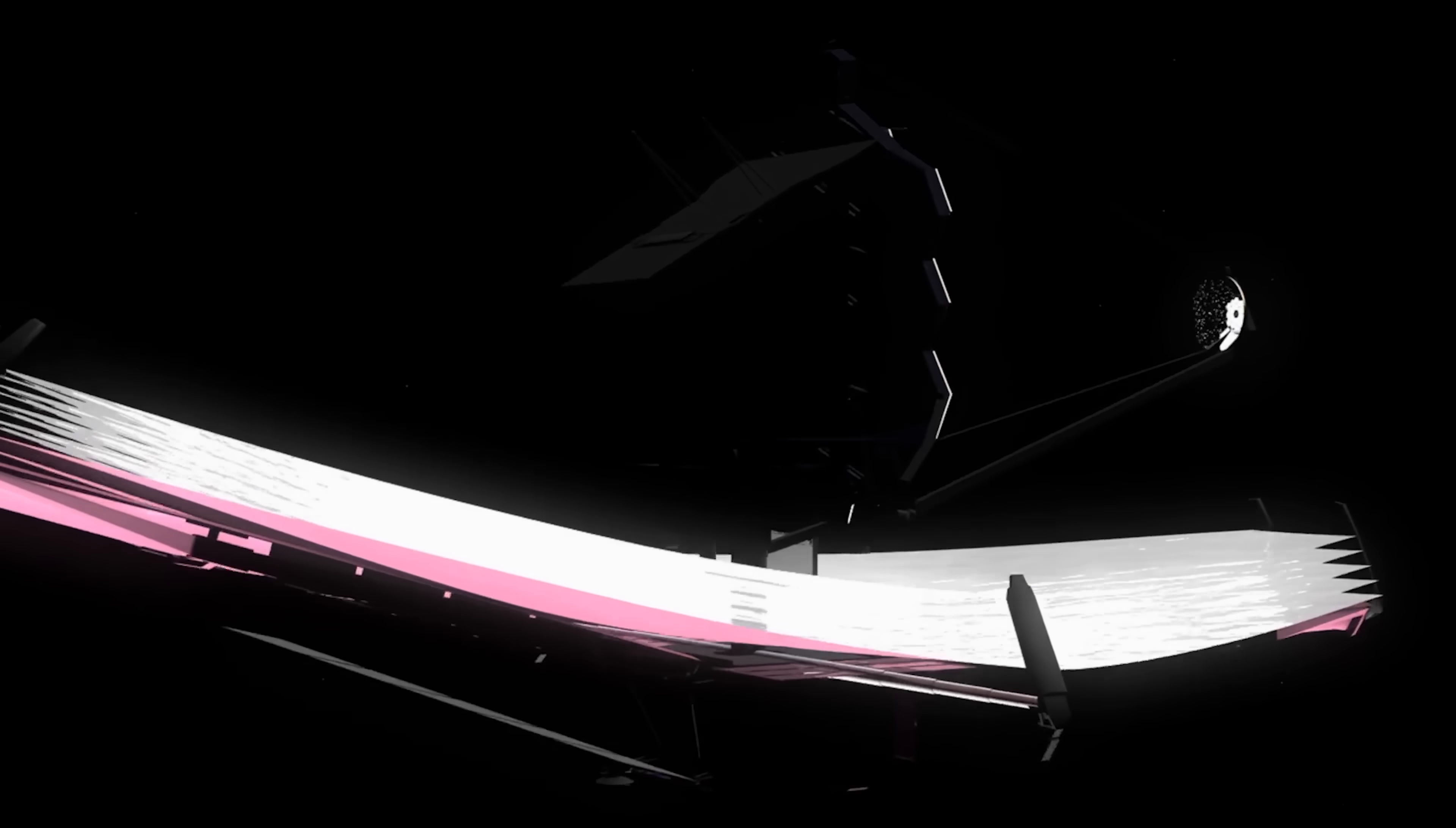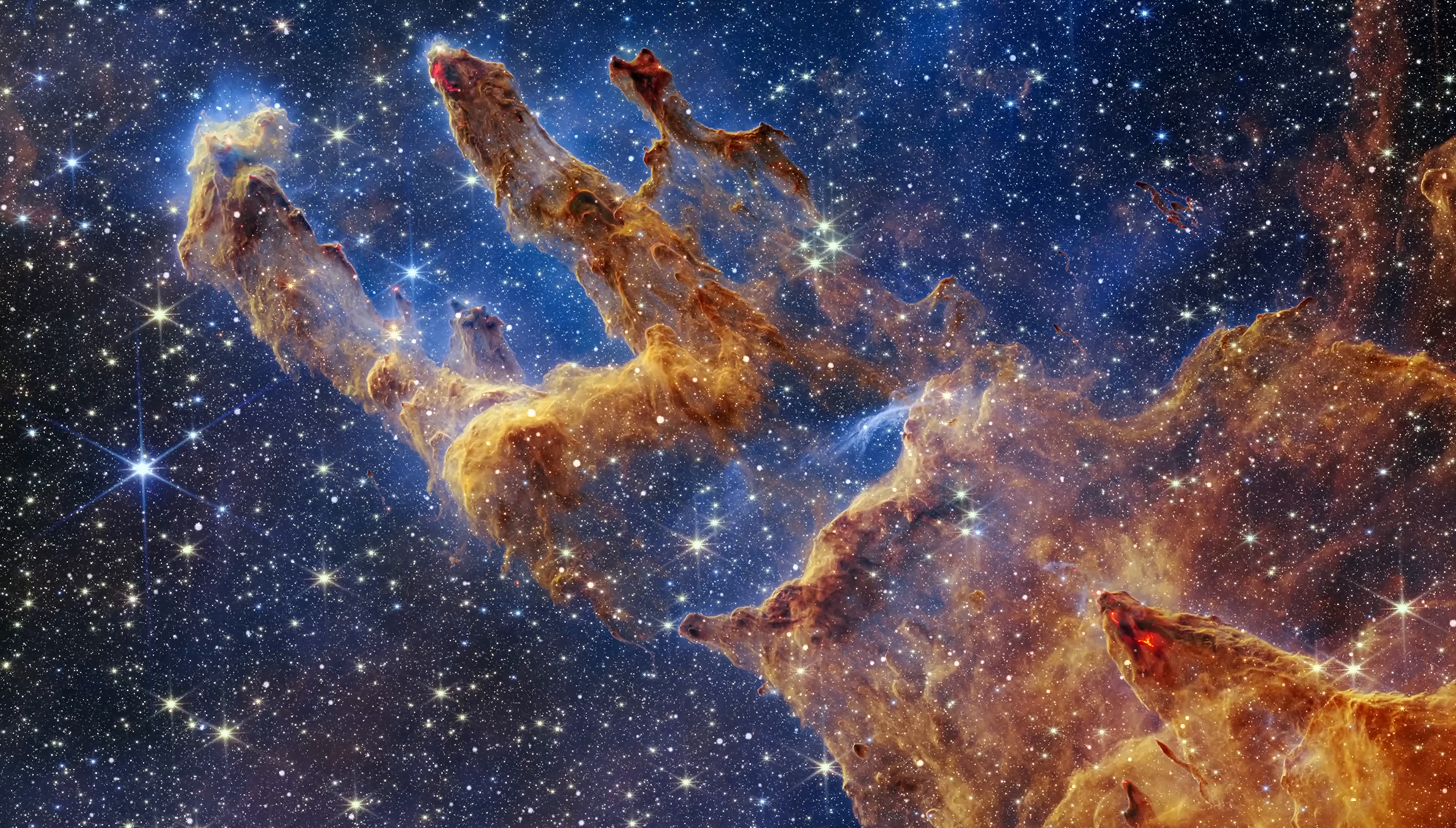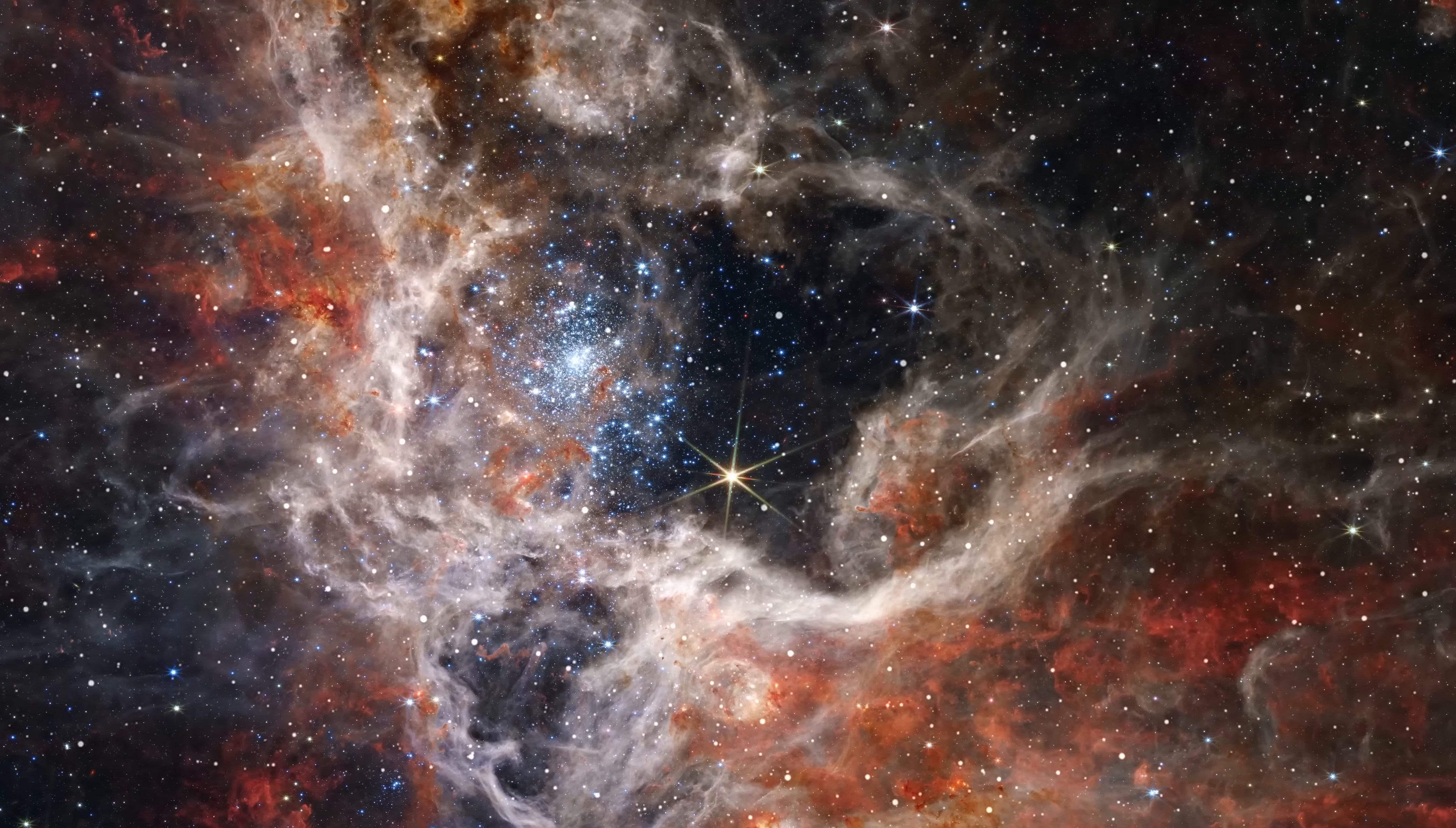But what about the James Webb? The truth is, we still don't know exactly what it has found. With its incredibly sensitive infrared vision, JWST can detect even the faintest signals from the distant universe. It is the most powerful eye humanity has ever possessed. And if there are any secrets hidden within 3I Atlas, James Webb is the key to unlocking them.